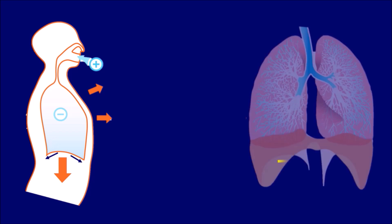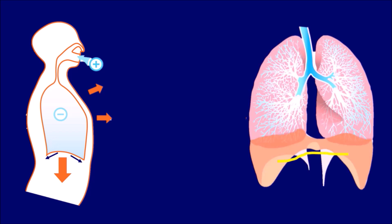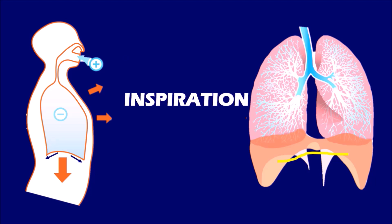This process is known as expiration. Whereas in reverse, when the diaphragm contracts, it becomes flattened and moves downwards. As a result, the volume of the chest cavity is increased and pressure is decreased. This results in the movement of air from the outer atmosphere into the respiratory system of human beings. This is called inspiration.